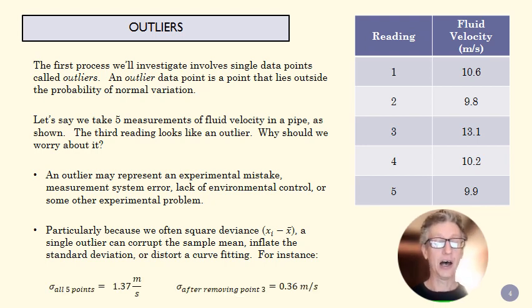For instance, if we take the standard deviation of these five points, we get 1.37 meters per second. If I take out that one data point, my standard deviation is about one-fourth of that value. So one data point that's far from our mean has a kind of outsized influence on the rest of our data set and its statistical markers.